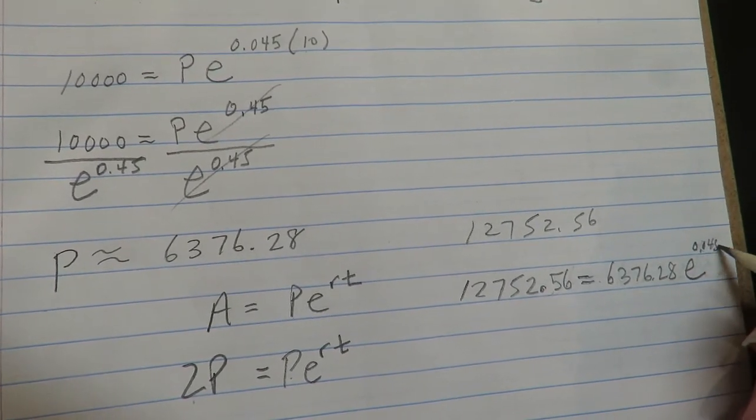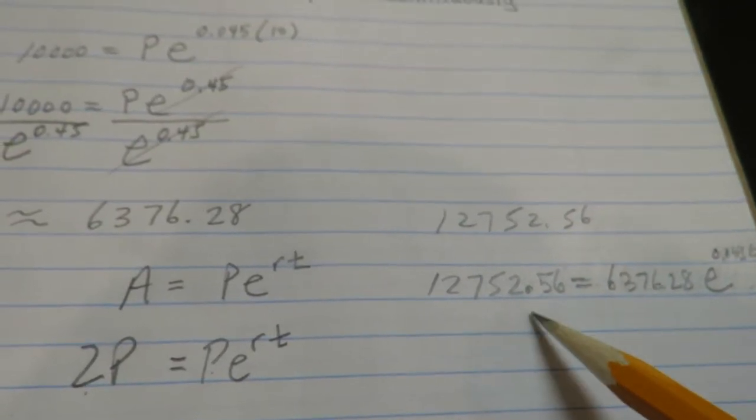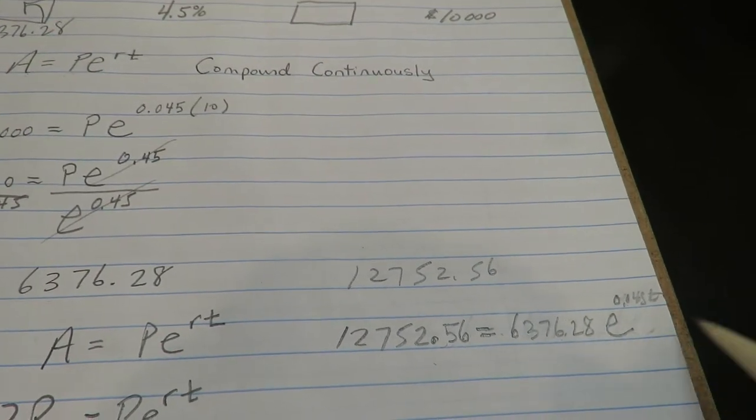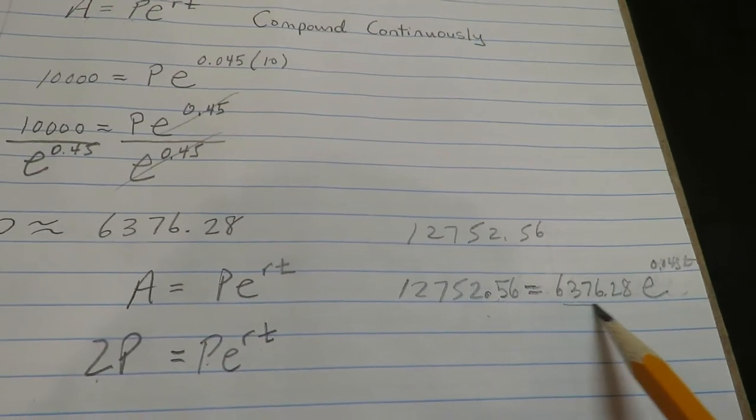0.045t. All right, the other way to do it is to take your initial value, double it, and then this will work out the same, right, because the first thing you have to do is divide this off.